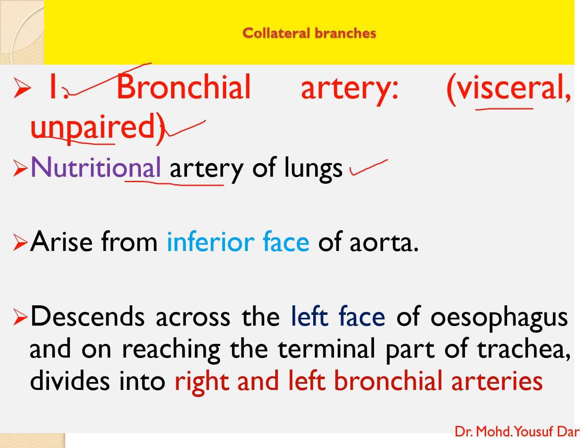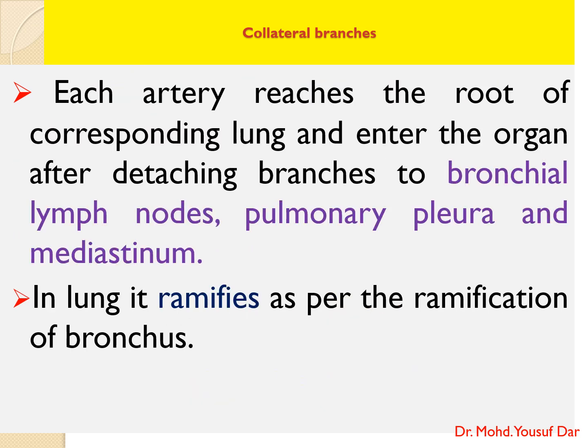The bronchial artery arises from the inferior face of the aorta. It descends across the left face of the esophagus and reaches the terminal part of the trachea, where it divides into the right and left bronchial arteries.